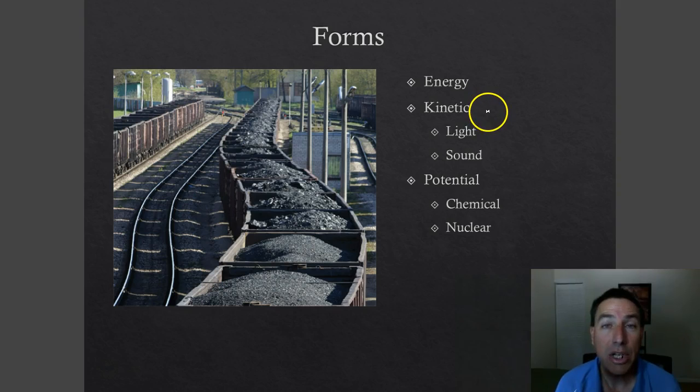Kinetic is the energy of motion. We have this train car here, and if this train car is moving down the track, then we have kinetic energy as the energy of motion. There are other types of kinetic energy. For example, light energy is kinetic because the waves are moving. Same thing goes with sound. Sound is in waves as well, and because sound moves and creates vibration of the particles, it is also kinetic energy.